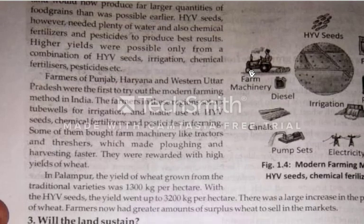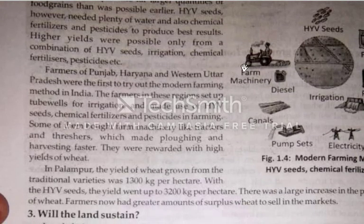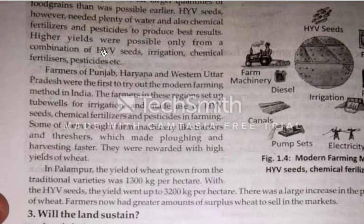HYV is related to modern farming. For high yielding varieties and better production, we need a combination of HYV seeds, irrigation, chemical fertilizers, and pesticides.